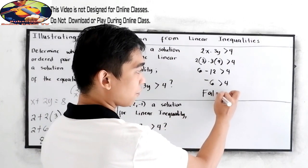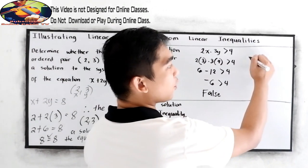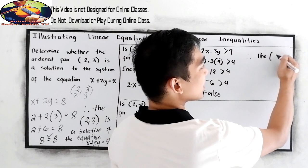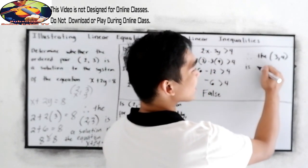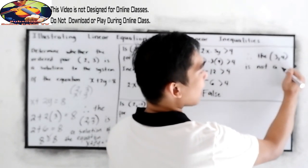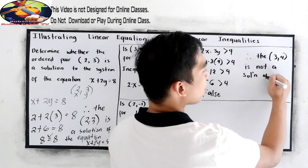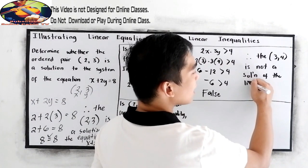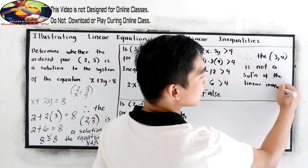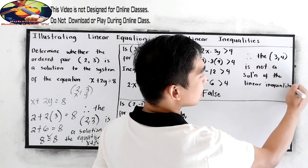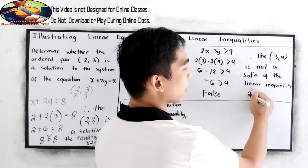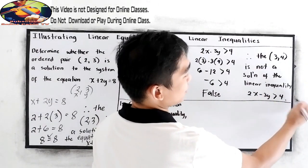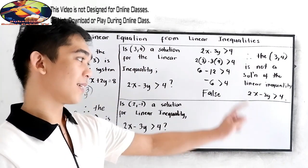This is false. Therefore, the ordered pair (3, 4) is not a solution of the linear inequality 2x minus 3y greater than 4. It is not a solution because testing gives us an incorrect result.